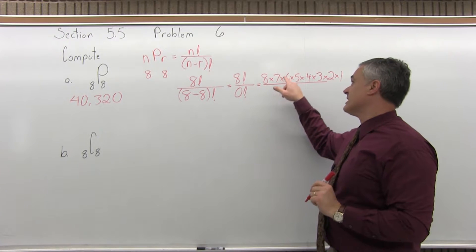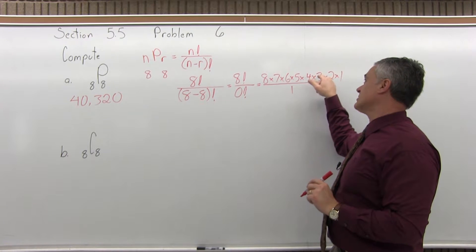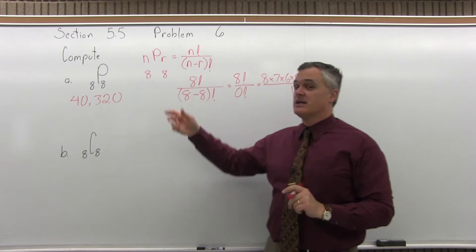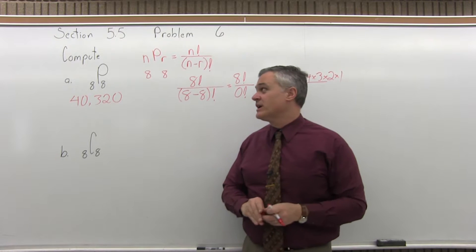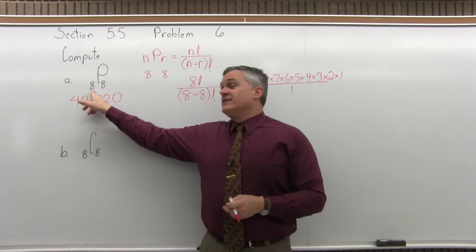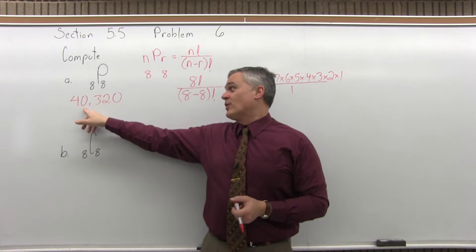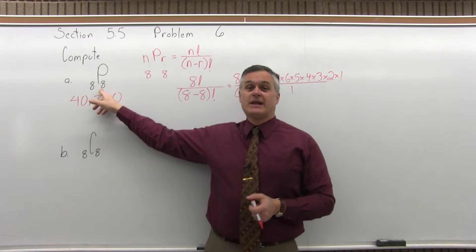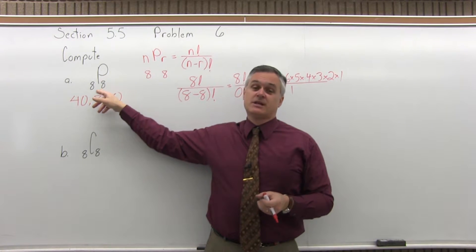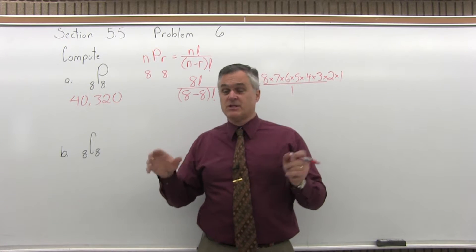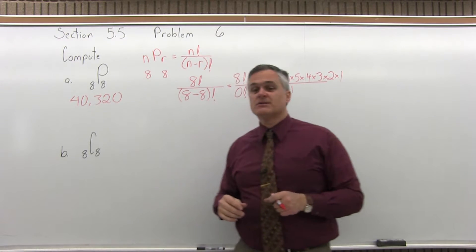If you multiply 8 times 7 times 6 times 5 times 4 times 3 times 2 times 1, the answer is 40,320. So, if you have 8 things to choose from, there's over 40,000 different ways you can choose all 8 of them when you have no repeats and the order matters.